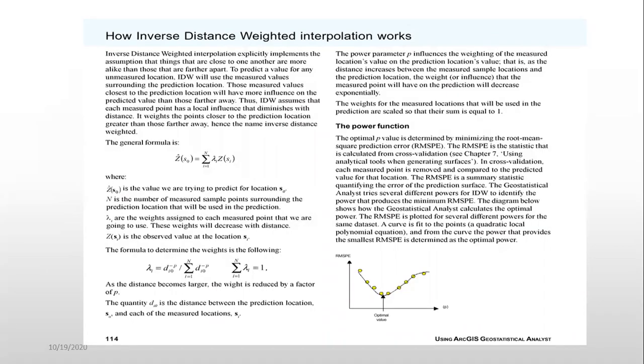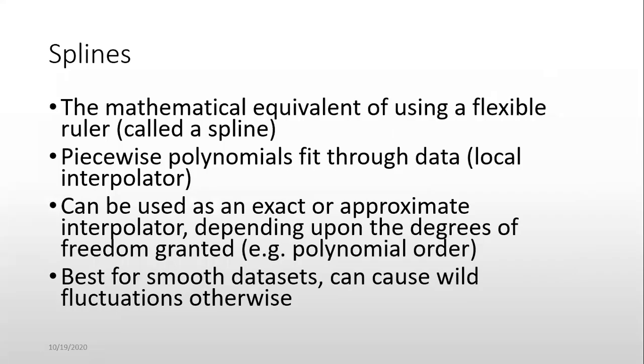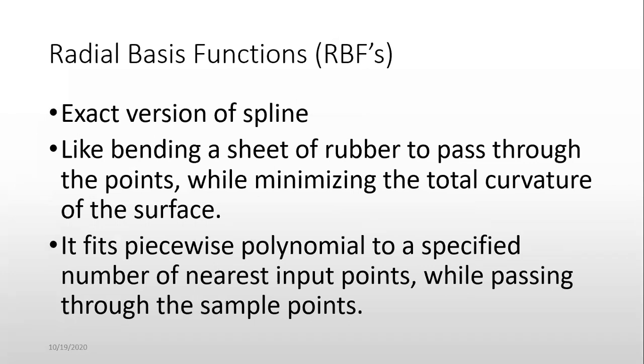These are the explanations. I will provide you this slide and you can read it. Splines: the mathematical equivalent of using a flexible ruler called a spline. Piecewise polynomials fit through data. Local interpolator. Can be used as exact or approximate interpolator depending upon the degrees of freedom granted polynomial order. For smooth data sets, can cause wild fluctuation otherwise. Radial basis function (RBF).